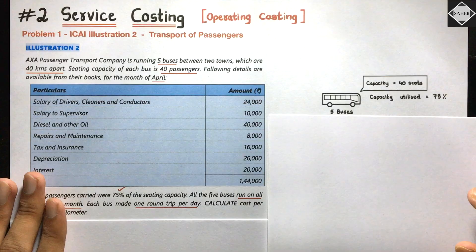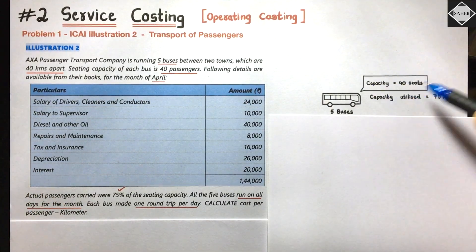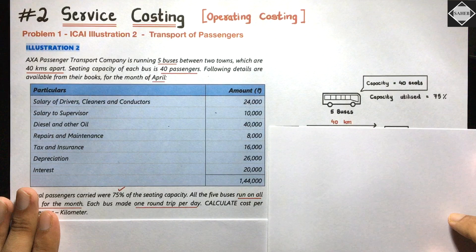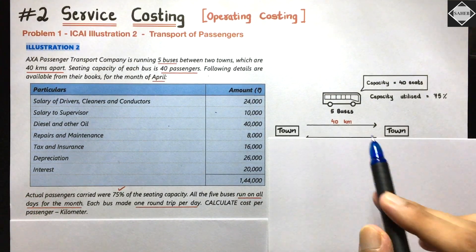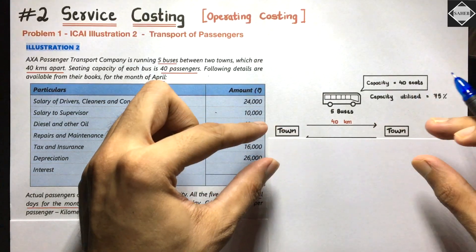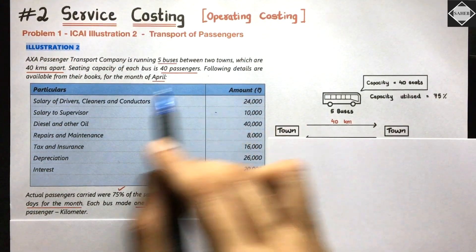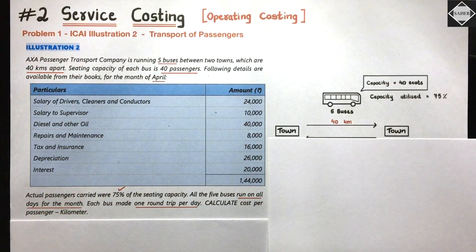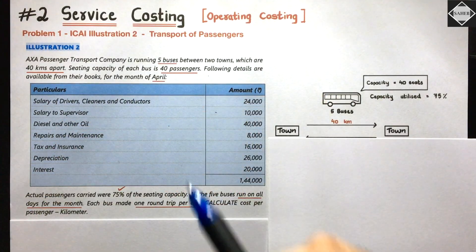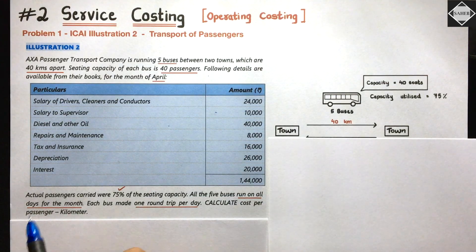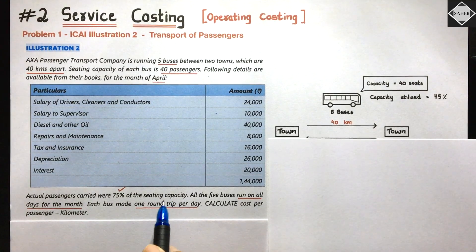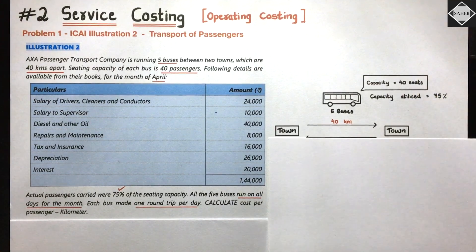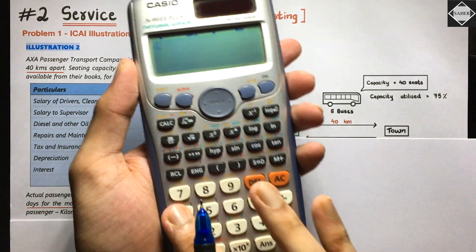So to note the given data: there are five buses in the company, each with a capacity of 40 passengers, running between two towns 40 kilometers apart as a one-route bus service. The following details are available from their books for the month of April - so this is monthly data. Actual passengers carried were 75% of the seating capacity.